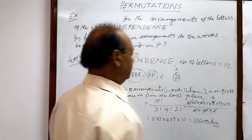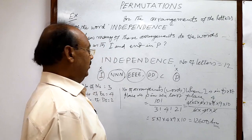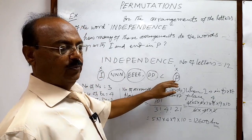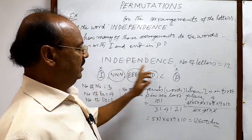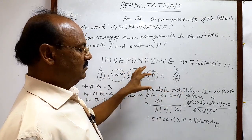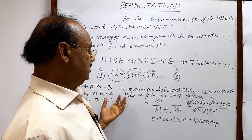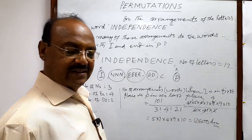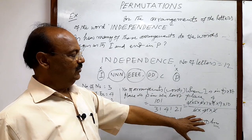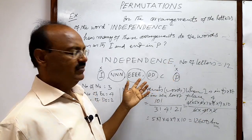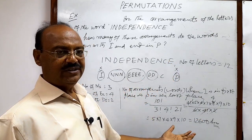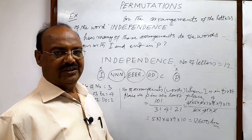After multiplying these numbers we will get 12,600. So this is the answer. When I is kept in the first place and P in the last place — meaning words start with I and end in P — the total number of arrangements of the letters is 12,600. Hope you have understood it very well. The question is very simple, so you might have got it properly. Thank you very much for watching this video.